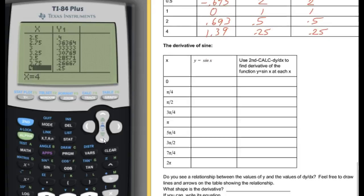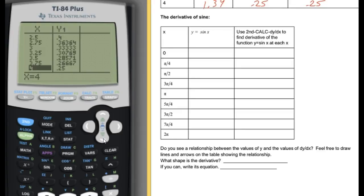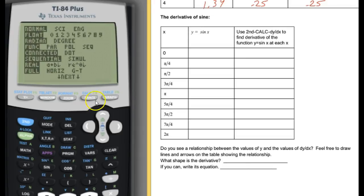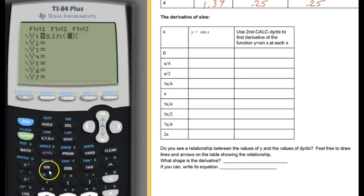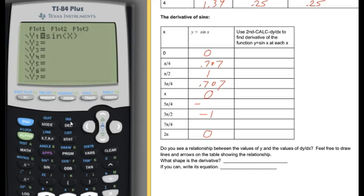Finally, we're moving on to the last section: the derivative of sine. First we're going to put the calculator into radians mode, then put in y equals sine of x and get some values. We don't really need the calculator for most of these: sine of 0 is 0, sine of pi is 0, sine of 2 pi is 0. Sine of pi over 2 is 1, sine of 3 pi over 2 is negative 1, and sine of pi over 4 is 0.707. You do enough physics problems and you memorize some of these.